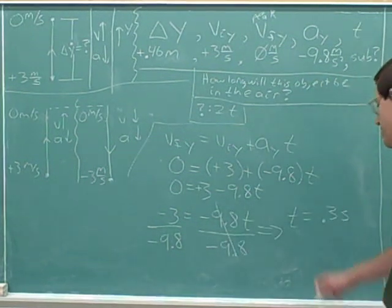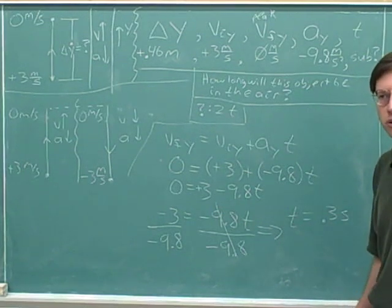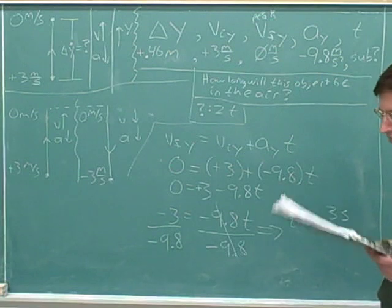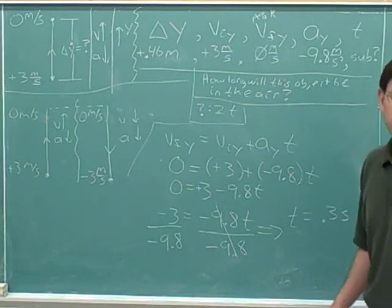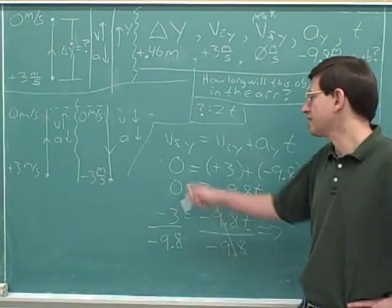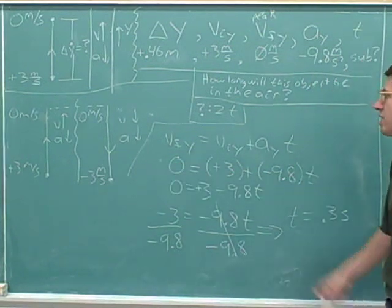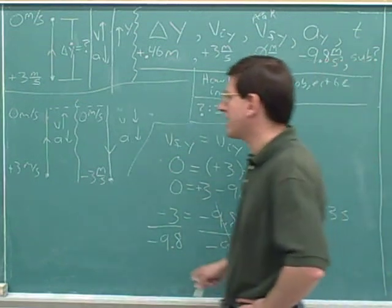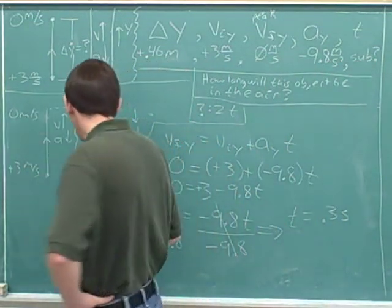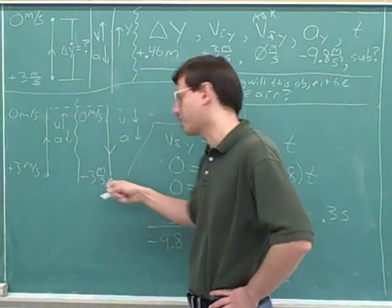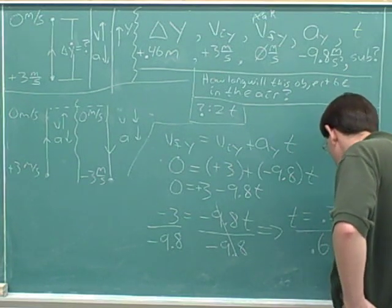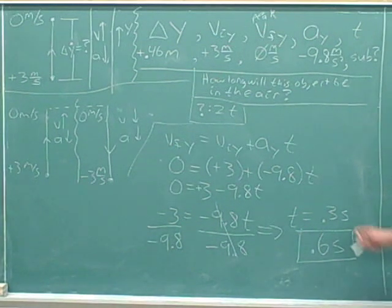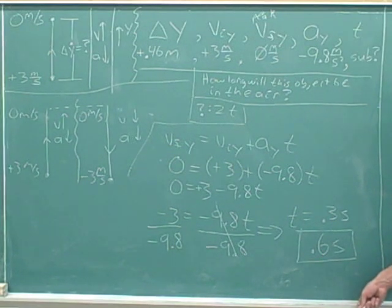Mathematically that came out to be positive — we know it has to, because times are always positive. If the time had come out negative, we would have known we made a mistake. I'm not going to put a box around this because this is not the answer — this just tells us how much time it takes to reach the peak, because this is how much time it takes to reach a velocity of zero, and the velocity is zero at the peak. But the question was asking how long we're in the air. So we know it takes 0.3 seconds to go from the ground up to the peak, and then it's going to take another 0.3 seconds to get from the peak down to the ground. So the answer — the time in the air — is going to be 0.6 seconds.